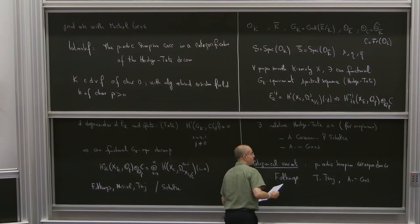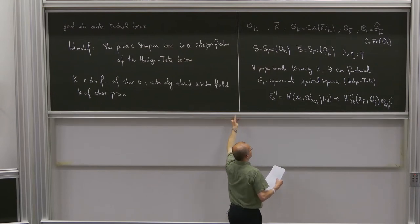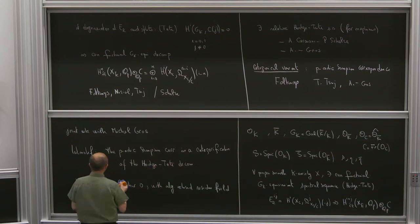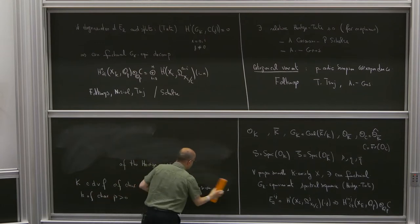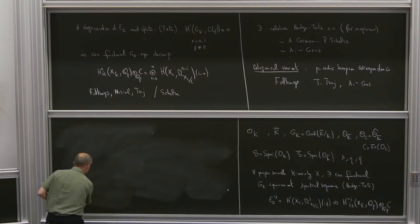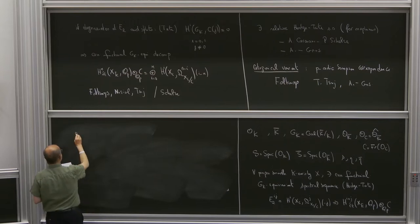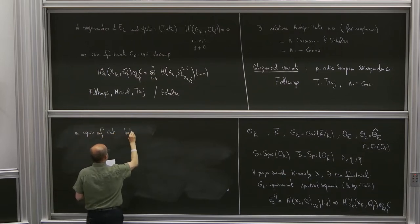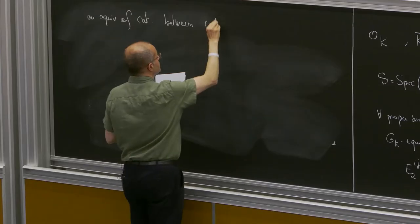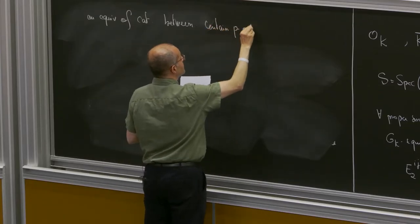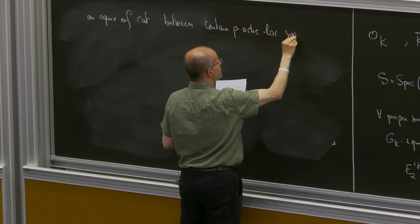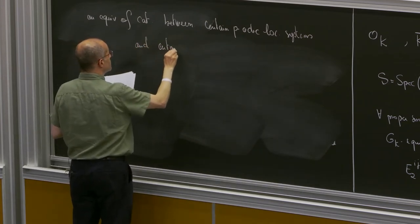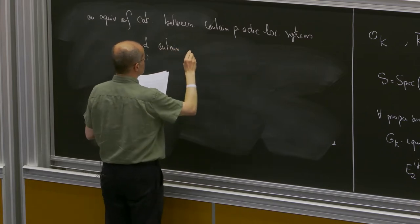So what is this correspondence? Roughly speaking, in this introduction — we will describe it more precisely as we progress — this correspondence produces an equivalence of categories between certain p-adic local systems and certain Higgs bundles.